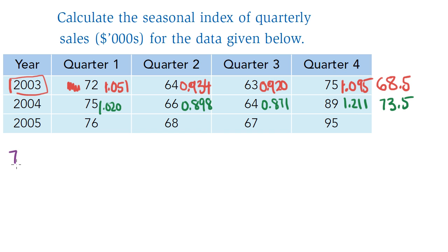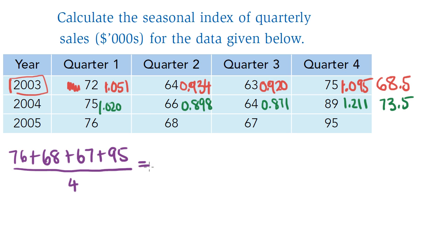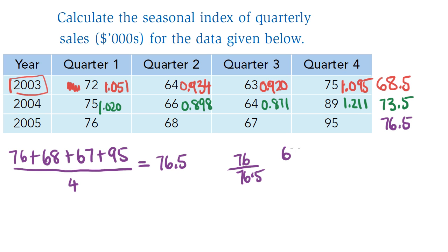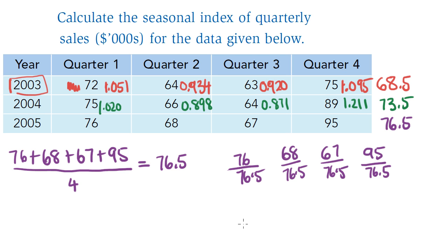Let's do the same thing for 2005. The first step is to work out the average: 76 plus 68 plus 67 plus 95 divided by 4 gives 76.5 — that's the yearly average. To determine the yearly proportions I divide each data value by that yearly average: 76 divided by 76.5, 68 divided by 76.5, 67 divided by 76.5, and 95 divided by 76.5.